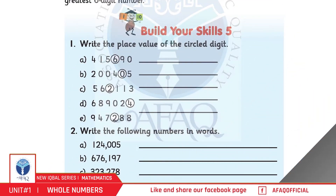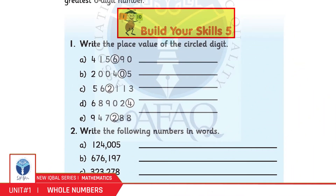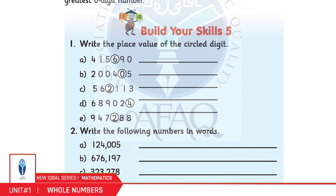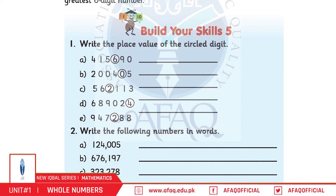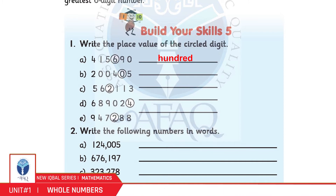Build Your Skills 5. Question 1: Write the place value of the circled digit. A: 6 in 415,690 — Hundreds (100). इसی ترح سے اگلے parts آپ نے خود حل کرنے ہیں۔